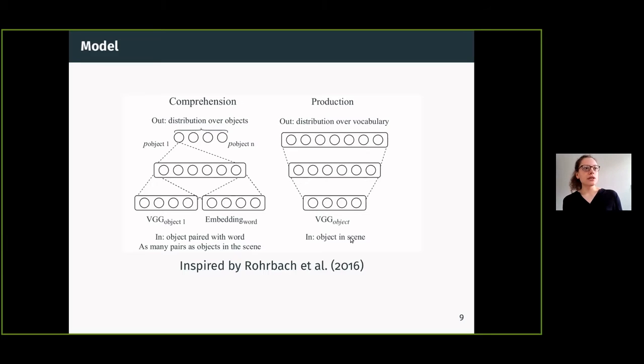Now then, what we can do is we can input an object in the scene, again represented as these VGG vectors which are sort of like high-level visual features, and this production module outputs a distribution over the vocabulary.